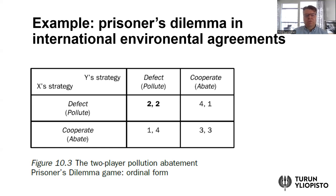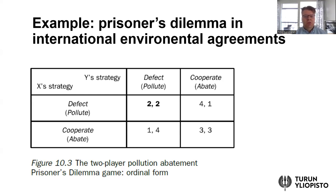Let's consider two players: two large countries indicated by X and Y. You could think, for example, of the USA and China. We could think about the abatement of greenhouse gas emissions or carbon dioxide, for example. In this example, we have abstract countries X and Y, and there are two strategies: the countries can either cooperate to abate emissions, or they can defect and continue to pollute.